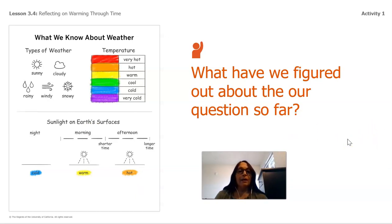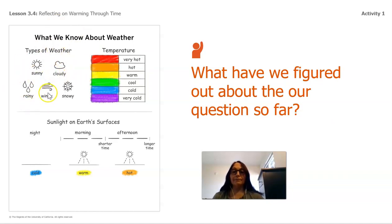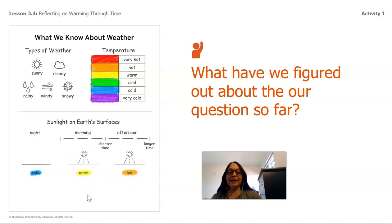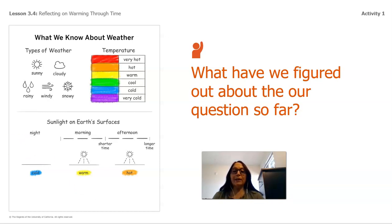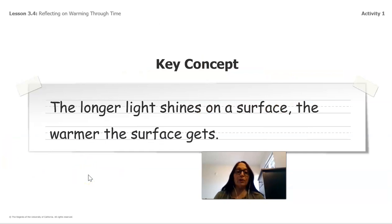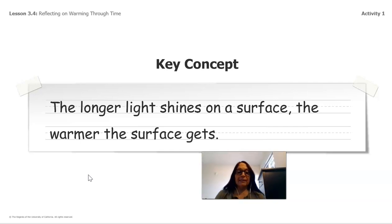Here is what we have figured out so far. We have collected information about different types of weather and temperature with our thermometer. We have seen that the longer sunlight is hitting the surface, the hotter it's going to be, and the shorter the time, the less hot — so it could be warm, and then it gets hot. Our key concept is: the longer light shines on a surface, the warmer the surface gets.